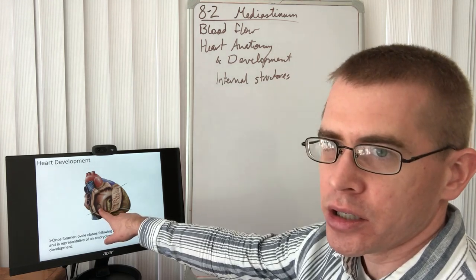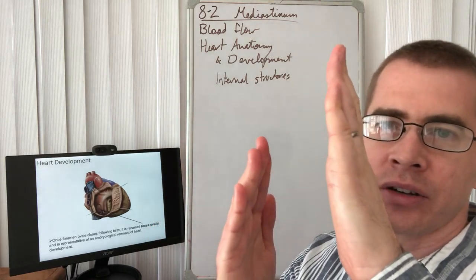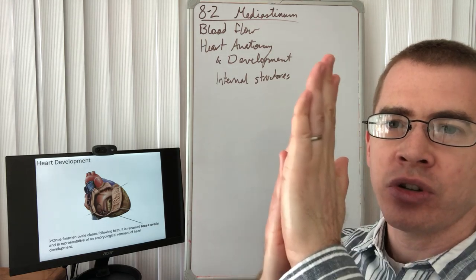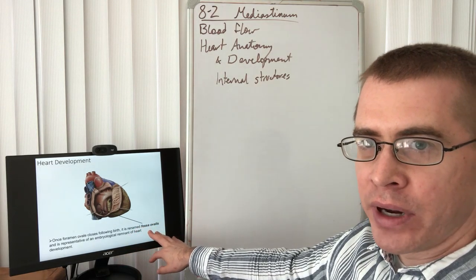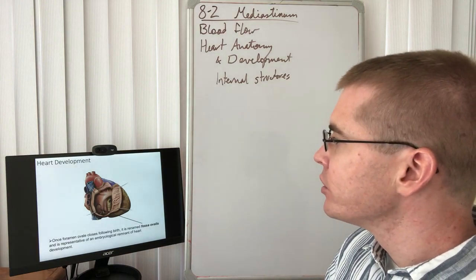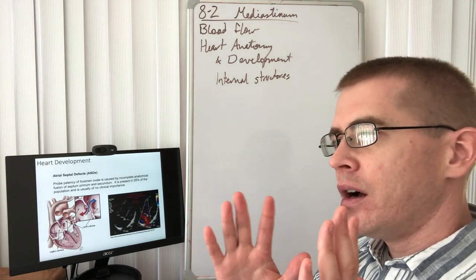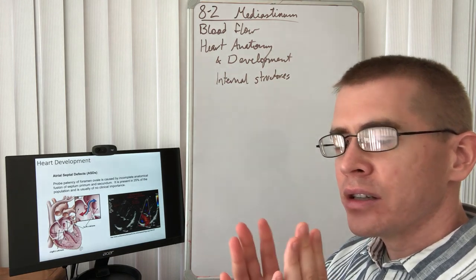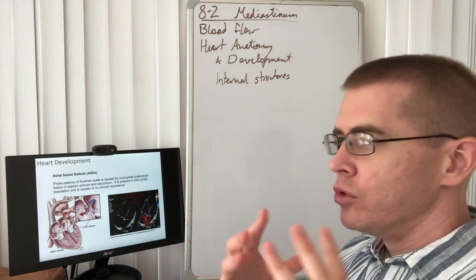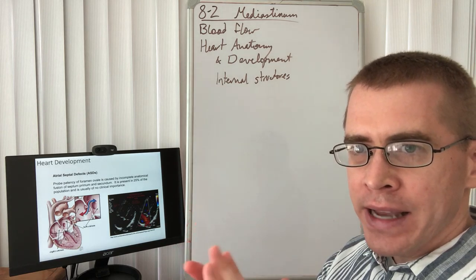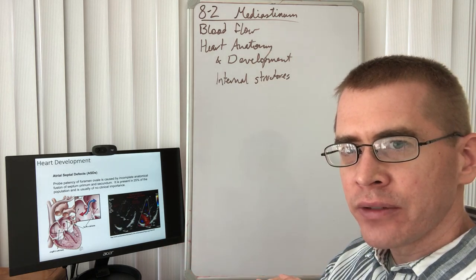Foramen ovale of the heart ends up closing. So the foramen ovale is actually two separate layers of the septum, and when the blood flow changes, those layers crash down on top of each other and fuse, causing that foramen to close and be renamed fossa ovalis. So there we see fossa ovalis within the right atrium, and that fossa ovalis doesn't completely close or completely form in about a quarter of the population. Normally, for almost all of the people with a patent foramen ovale of the heart, it results in no or very little clinically significant effects.